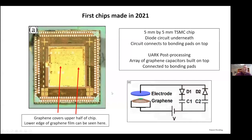We've been pushing this forward as hard as we can, and we made a first integrated circuit chip in 2021. This is a five millimeter by five millimeter chip made at Taiwan Semiconductor. Inside the chip is the diode circuitry connected to bonding pads around the outside. We left a big section in the middle blank, and after the chips came back we did post-processing: we built an array of graphene-electrode systems on the chip and connected them to the bonding pads and circuitry below. The graphene covers the whole upper half of the chip.